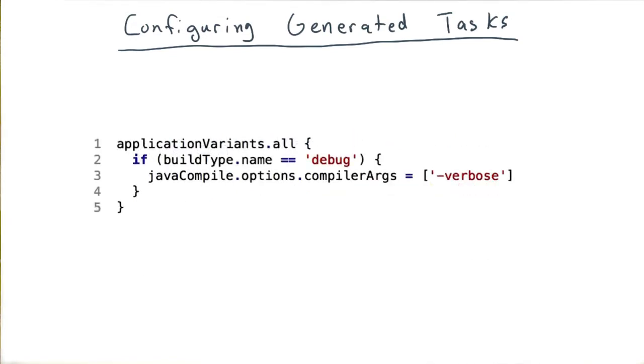So the Android Gradle plugin is nice enough to neatly package all the information about a variant for us, but the problem remains: how do we reference these variant objects?